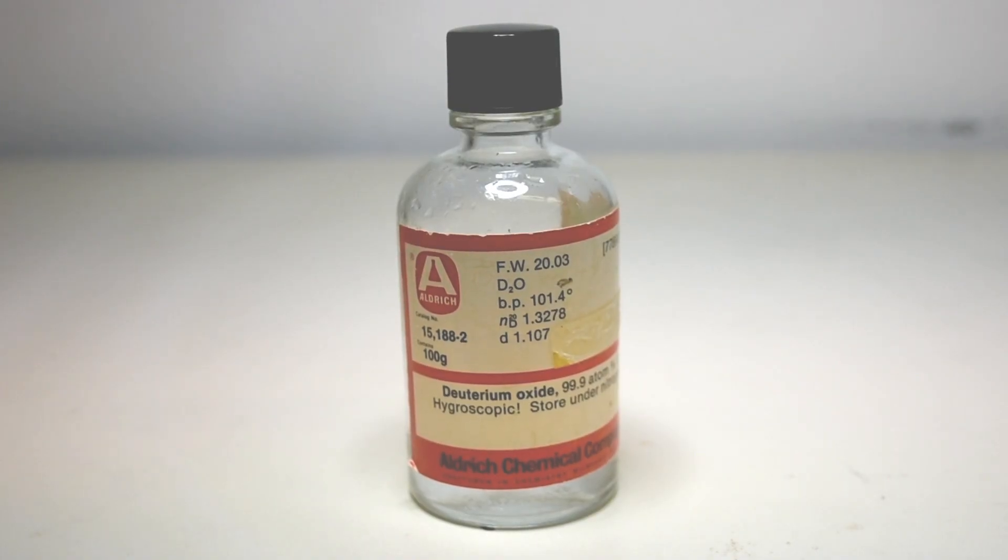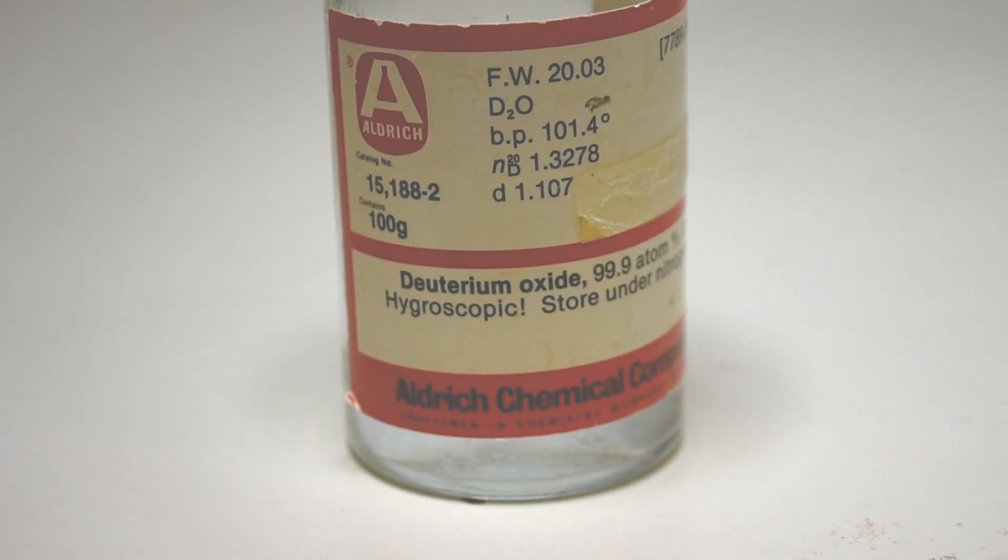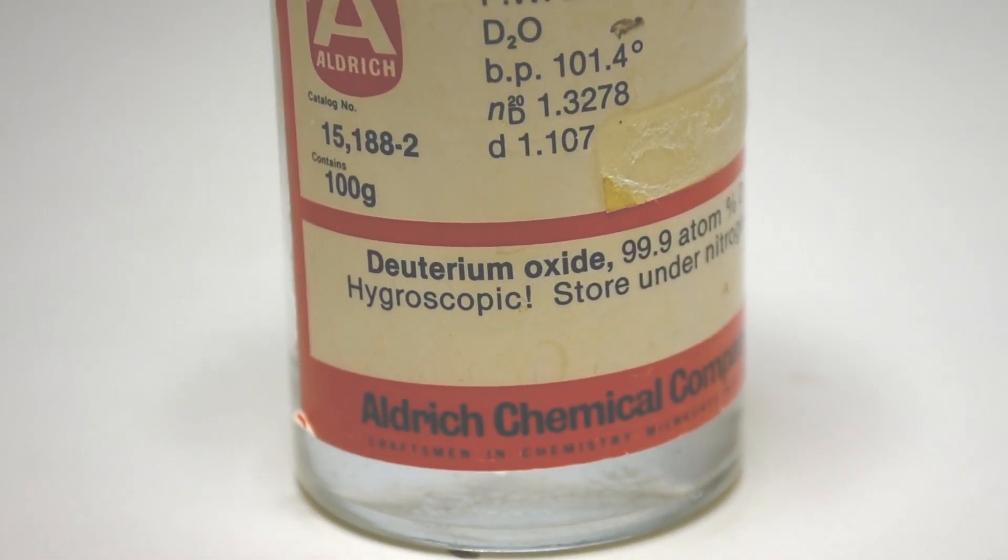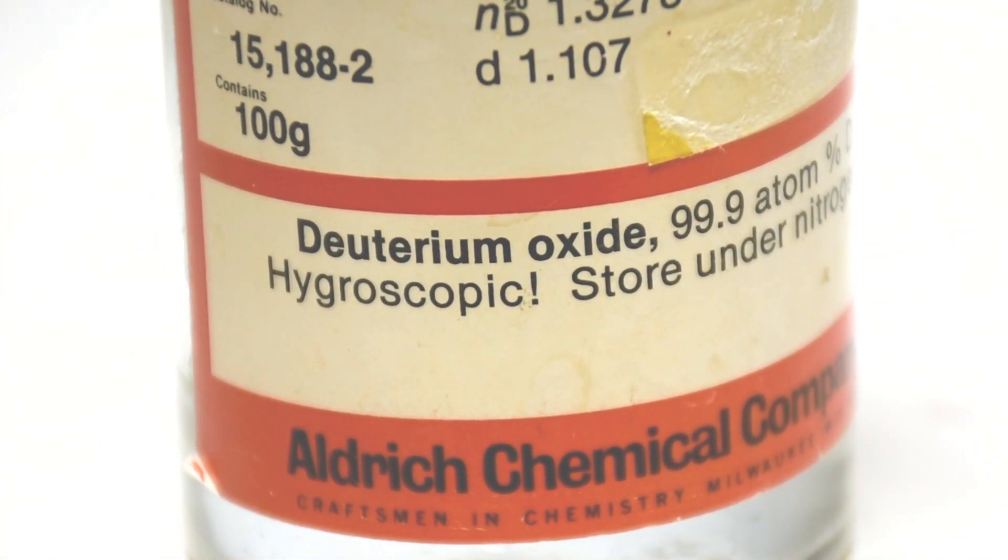The magnetic susceptibility of a material determines whether it will be attracted or repelled by a magnet. Diamagnetic materials are weakly repelled while paramagnetic materials are weakly attracted to a magnet.